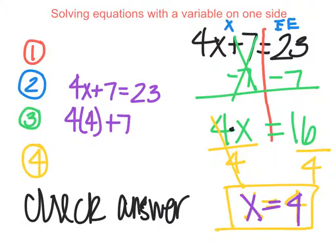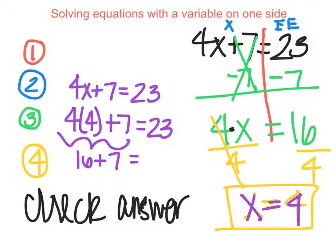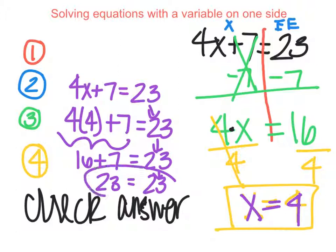So 4 times 4 plus 7 equals 23. We need to figure out what this side equals. Well, 4 times 4 is 16. Notice I'm just bringing down my 23. 16 plus 7 is 23, and again I'm bringing down this 23 on the right. Because these two are equal, we know that it really was our answer — we did the work correctly.